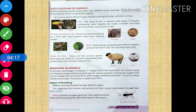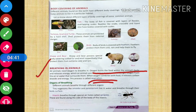Now let us discuss breathing in animals. All animals need oxygen to breathe in. The process by which oxygen burns the food within the animal's body and releases energy is called respiration. When oxygen combines with food, it releases carbon dioxide and energy.